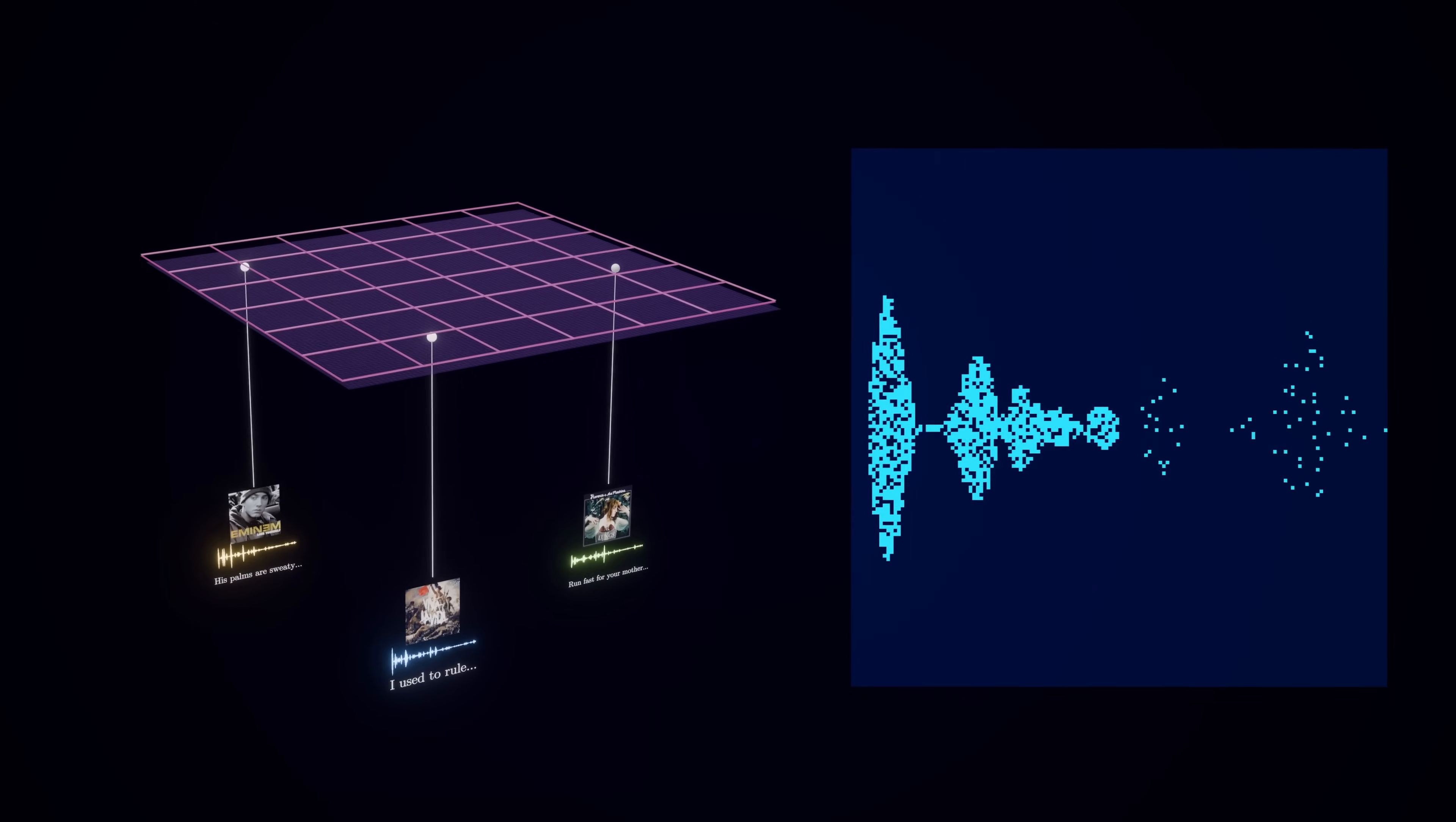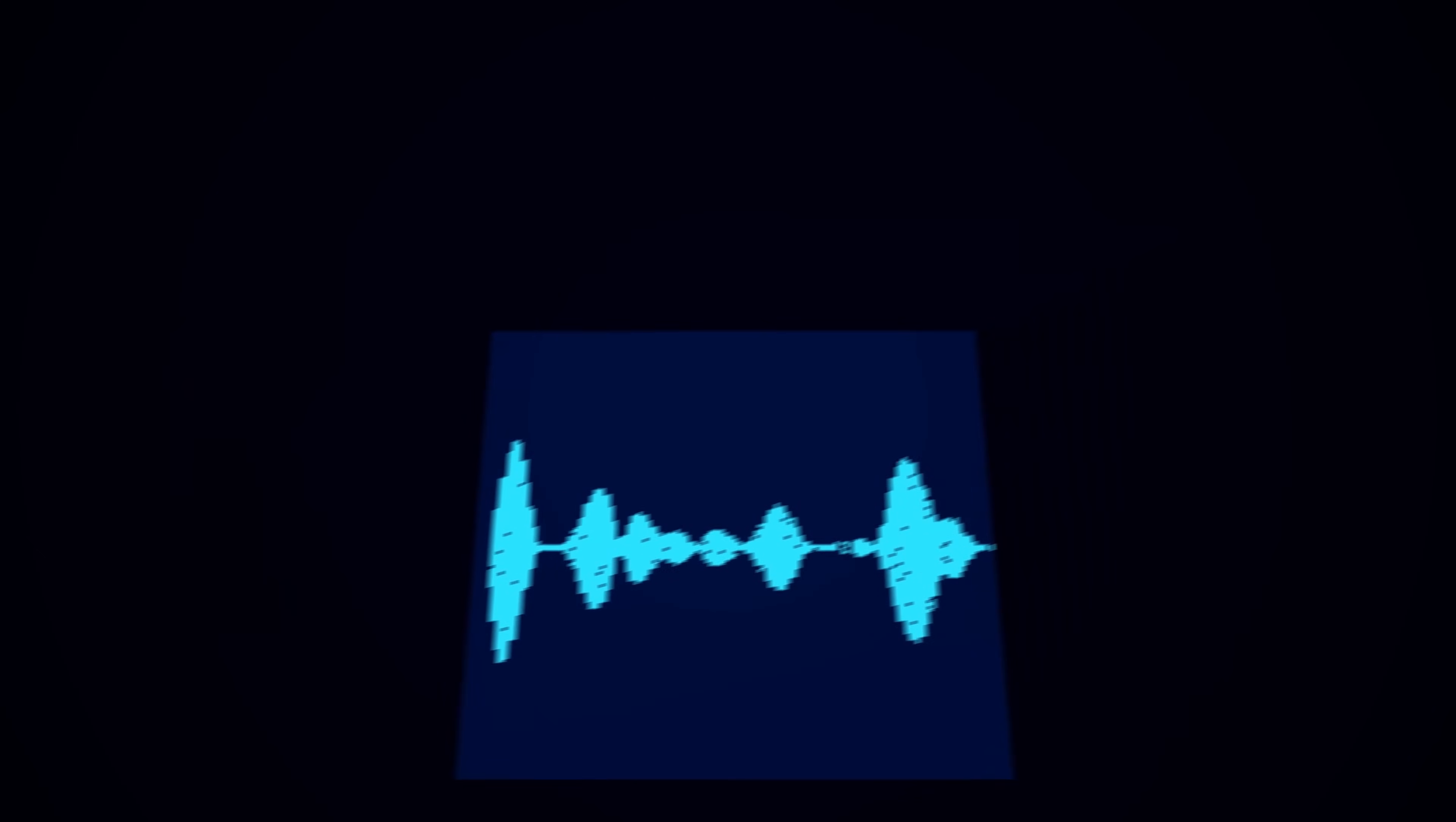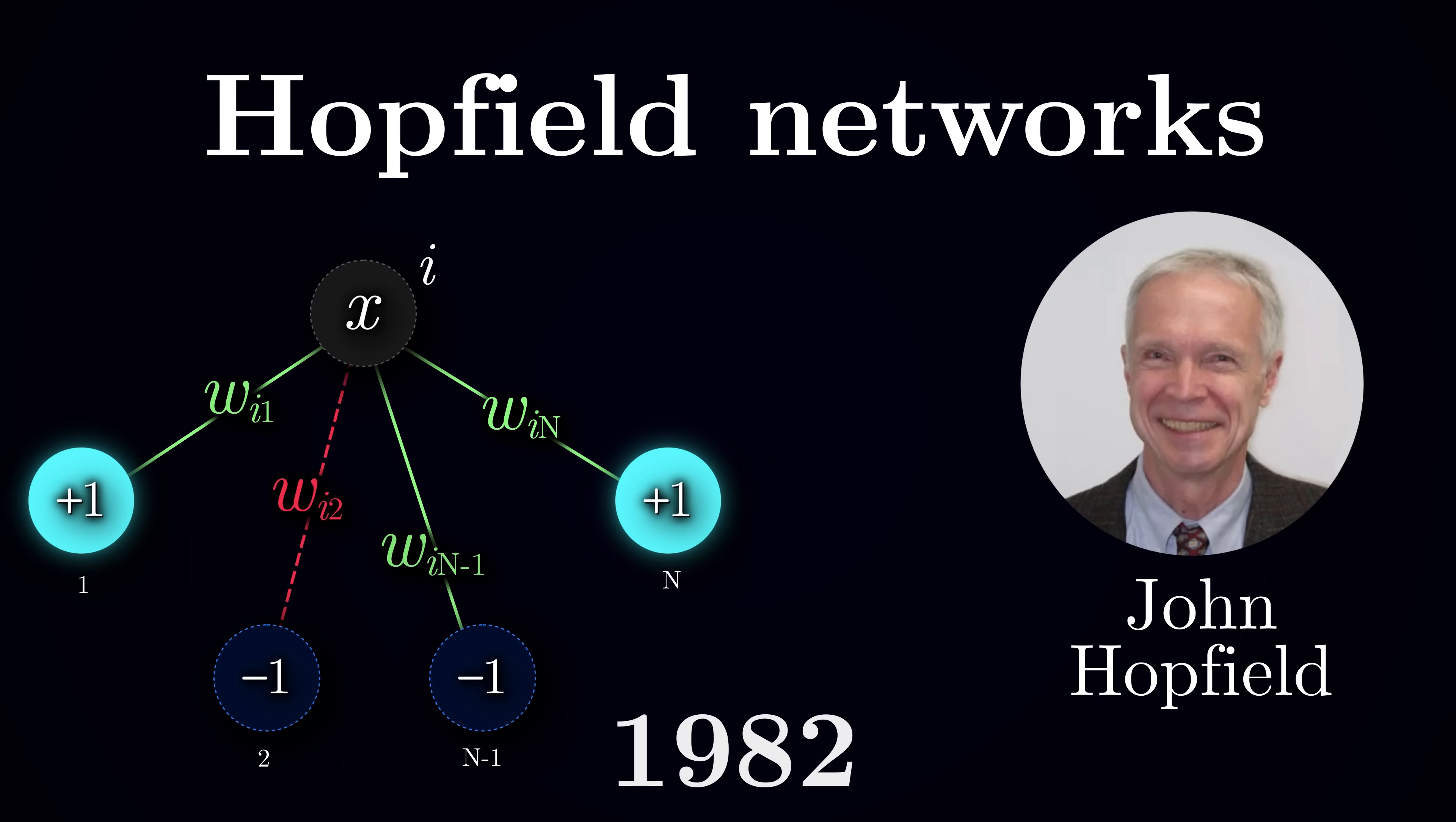In this video, we will lay the foundation for a new paradigm of information storage and retrieval, which is more in line with biology, and actually build one of the simpler models of this process, known as Hopfield Networks, developed by John Hopfield in 1982, who laid important groundwork for many ideas in both neuroscience and machine learning.